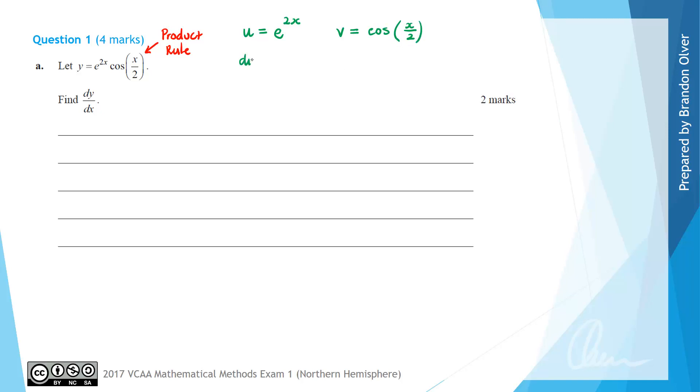Then we need to calculate du/dx. The derivative of e^(2x) is 2e^(2x), and dv/dx equals—cos goes to negative sine—so we have -1/2 sin(x/2). You can use your formula sheet to help find those derivatives too.